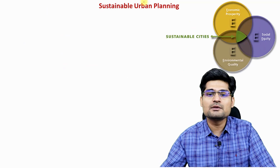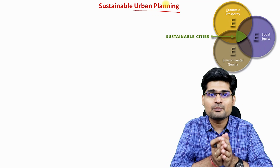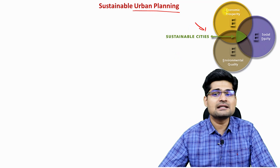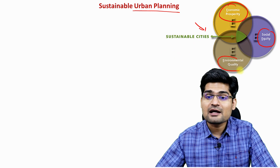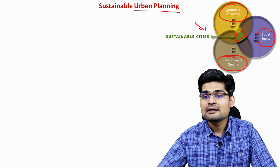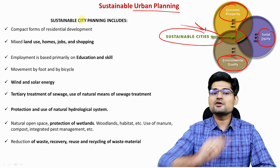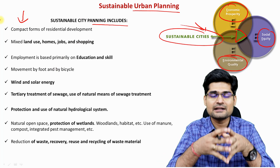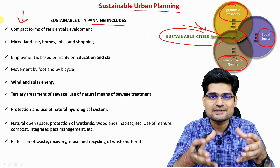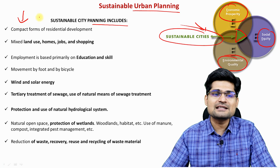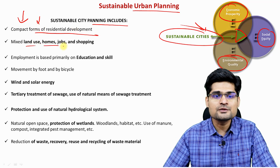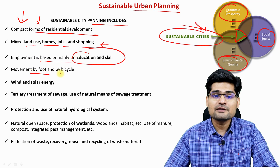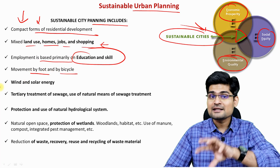To achieve sustainable development, sustainable planning is the basis. The framework of a sustainable city requires economic prosperity, social equity and environmental quality working hand in hand. Sustainable city planning includes compact forms of residential development, mixed land use with homes, jobs and shopping, and employment based on education and skills. Development should promote movement by foot and bicycle, reducing pressure on fossil fuels, while wind and solar energy serve as alternative energy sources.